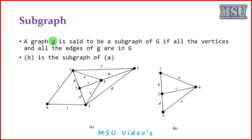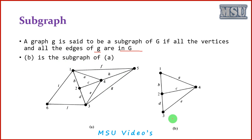A graph g is said to be a subgraph of G if all the vertices and all the edges of g are in capital G. Then you can say that it is a subgraph. So graph b is a subgraph of a. Here we define graph a, and this is actually a subgraph of a — all the edges and vertices of this subgraph are available in the main graph.